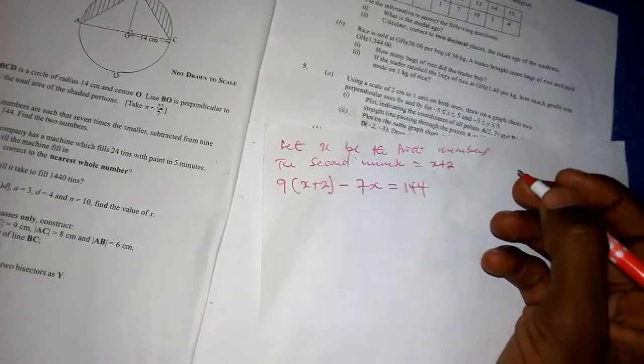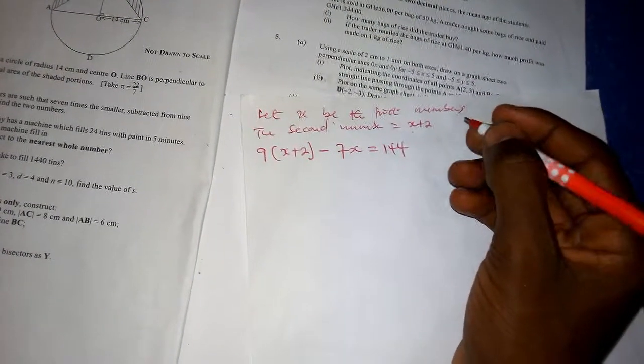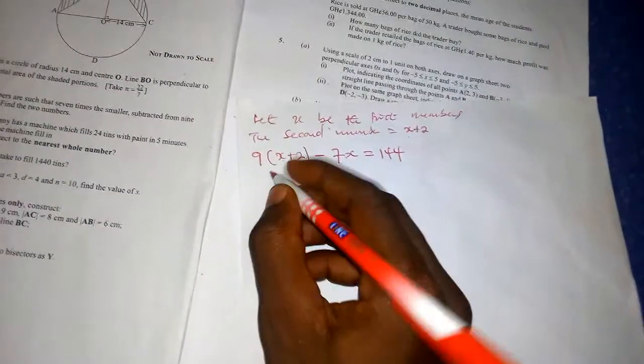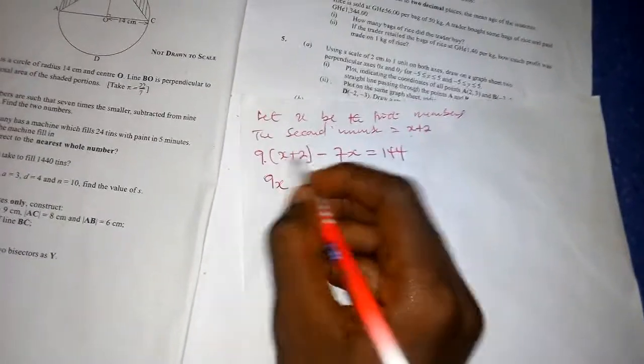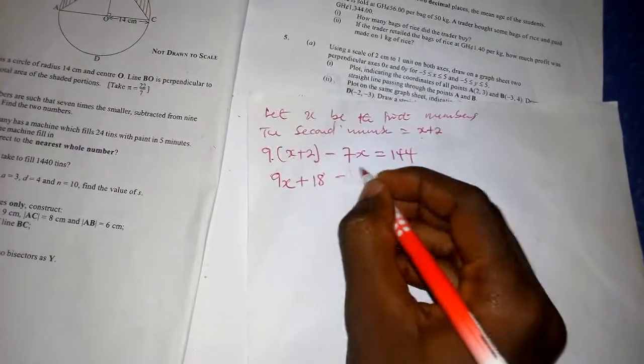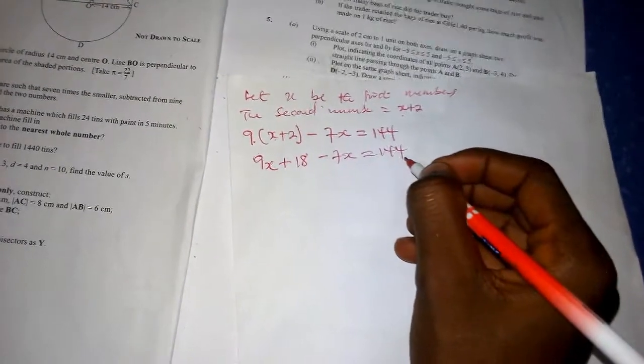Let us expand it. Nine times X will be 9X and nine times positive two is positive 18, minus 7X equals 144.